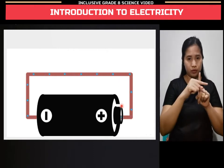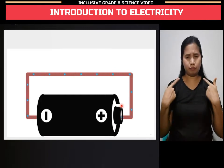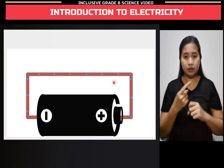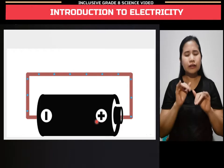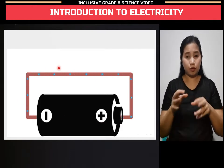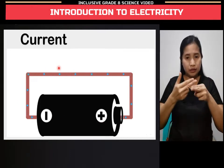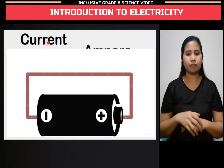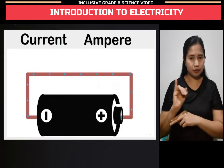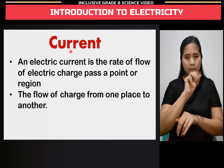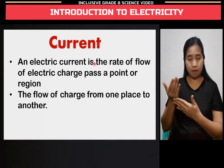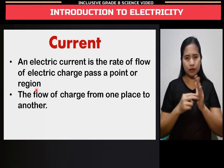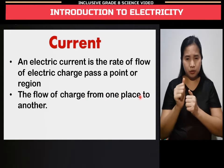When electric charge moves in a wire, we can say electric current flows in the wire — much like the way water current flows in a river. The flow of electrons is what we call current. Current is measured in amperes. An electric current is the rate of flow of electric charge past a point or region — the flow of charge from one place to another.